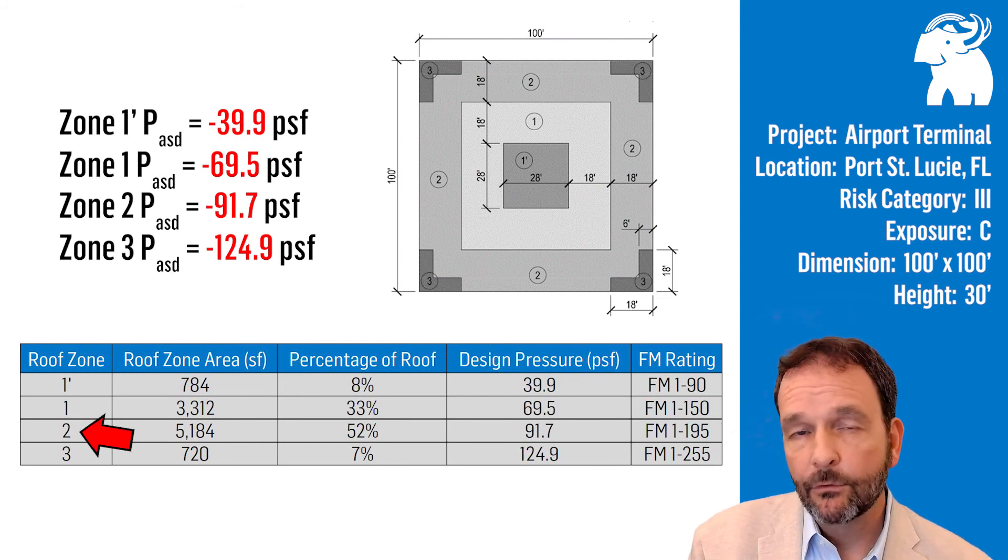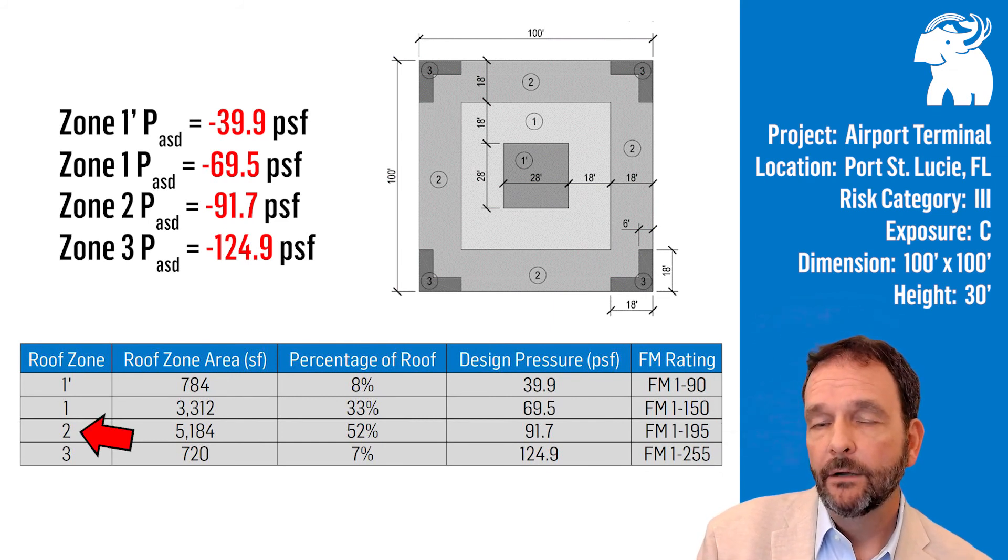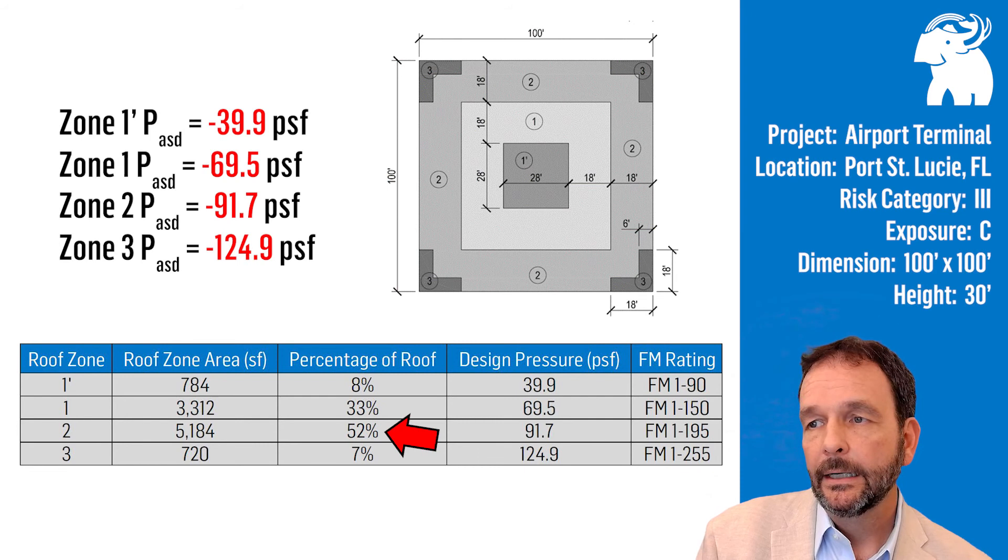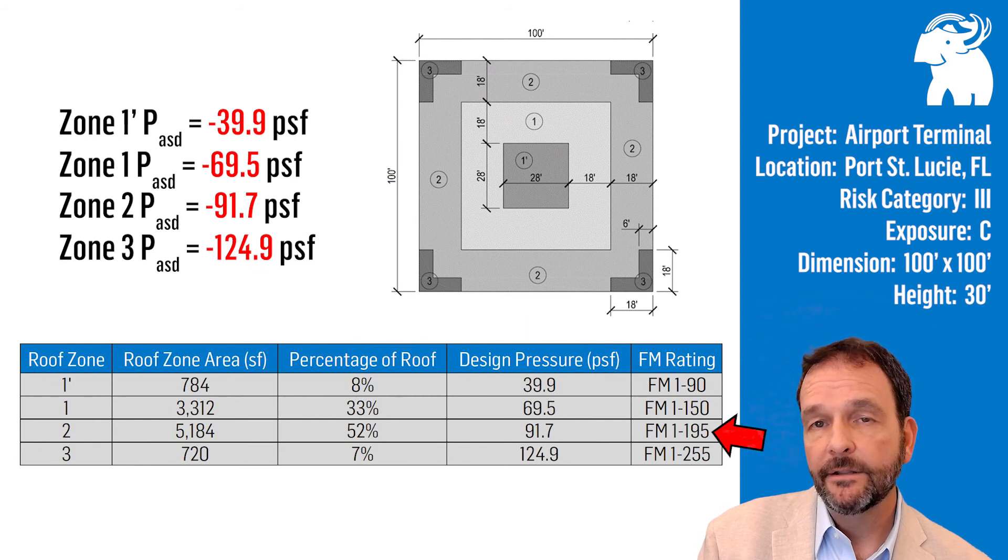For zone 2, the outer perimeter of the roof represents a little over 50%, 52% of our example problem, requiring a design pressure of 91.7 PSF or an FM rating of 1-195. Rather high pressure there.